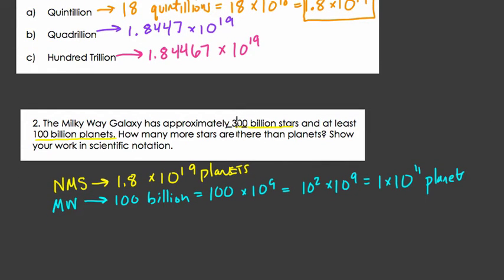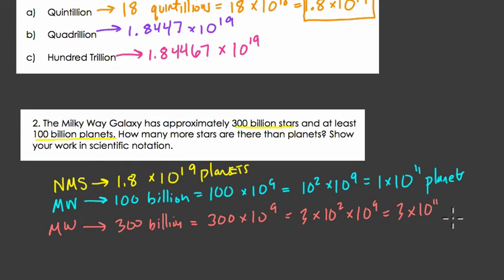In this problem, they're saying, if we take the 300 billion stars in the Milky Way and compare that to the number of planets, how many more stars are there than planets. We want to show this calculation in scientific notation. So 300 billion is 300 times 10 to the 9th, which is 3 times 10 squared times 10 to the 9th. That's 3 times 10 to the 11th stars.